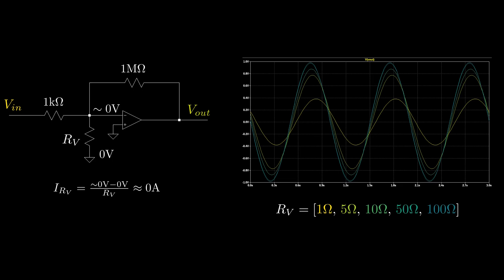For reference, what we just did was call the voltage at the top of the resistor a virtual ground. AKA, a voltage that is close to zero volts, but isn't directly connected to ground.